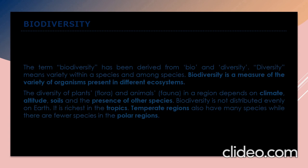Biodiversity is not distributed evenly on Earth. It is richest in the tropics. Temperate regions also have many species, while there are fewer species in the polar regions. We will discuss each of these one by one and I will show you with pictures how different animals and species live in the same region.